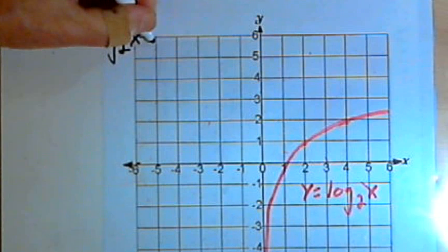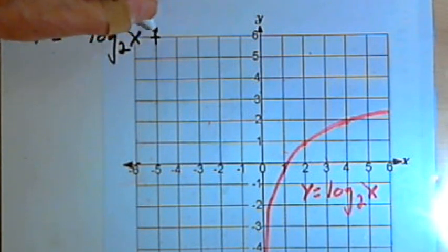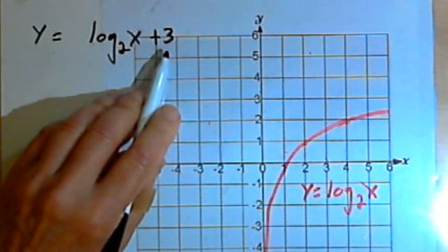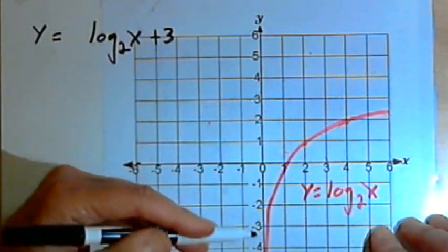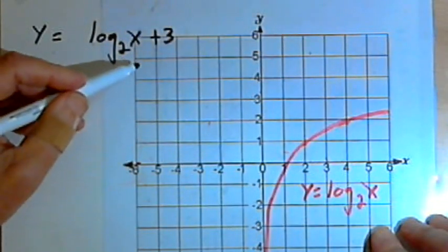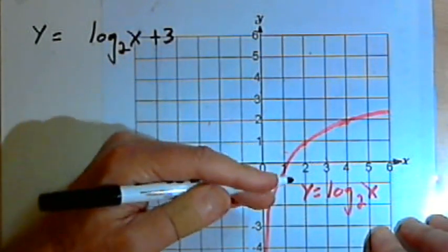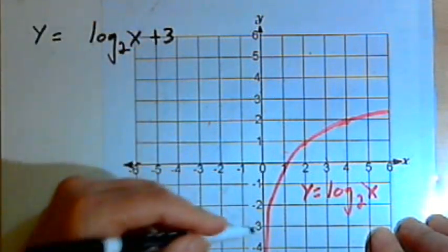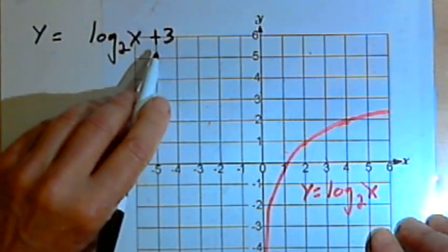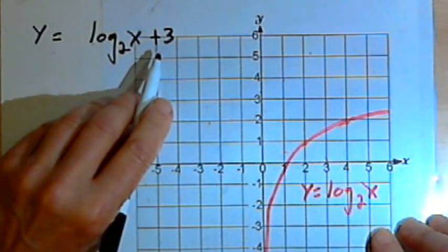As with other functions you've seen, if I take the basic function and add a constant to it, like a positive 3, what that's going to do is raise or lower the entire graph by that many units. A positive constant will raise the graph, a negative constant will lower the graph.